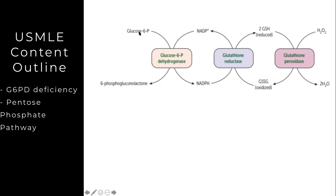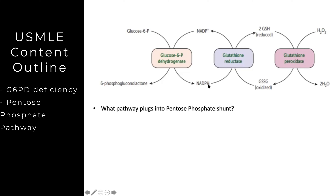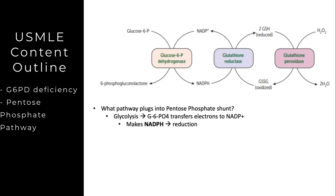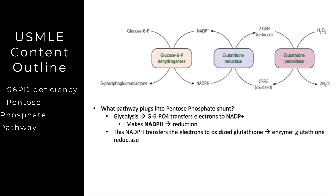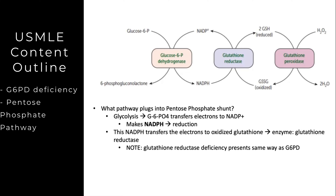Glucose-6-phosphate dehydrogenase, also known as G6PD, takes glucose-6-phosphate from glycolysis — remember glycolysis started with hexokinase/glucokinase — and makes NADPH. NADPH then transfers the H+ through glutathione reductase. For the MCAT mnemonic LEO GER: lose electrons is oxidation, gain electrons is reduction. So G6P transfers electrons to NADP+ making NADPH, and NADPH transfers electrons to oxidized glutathione via glutathione reductase.